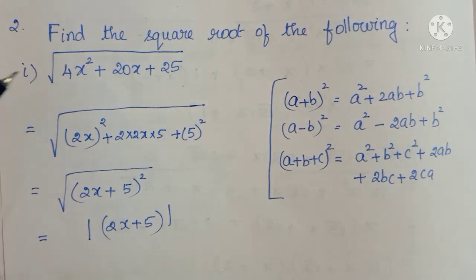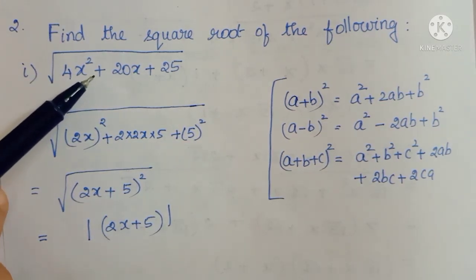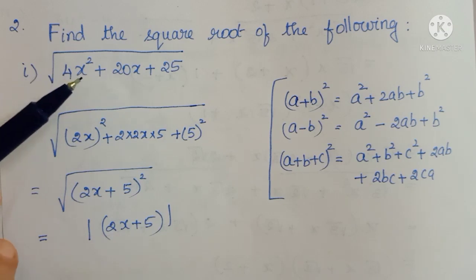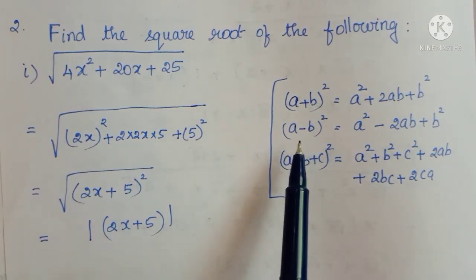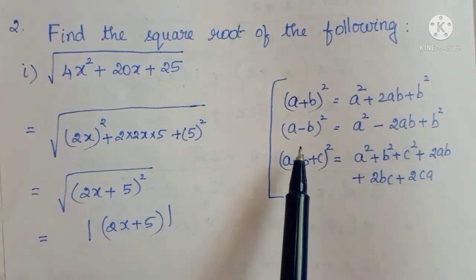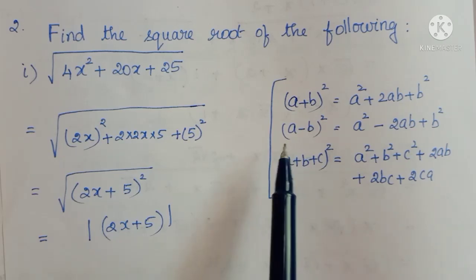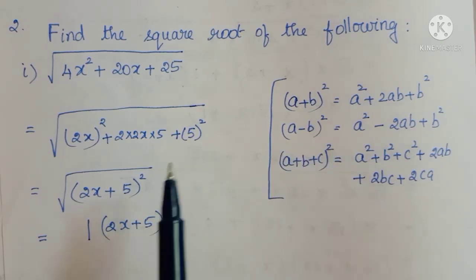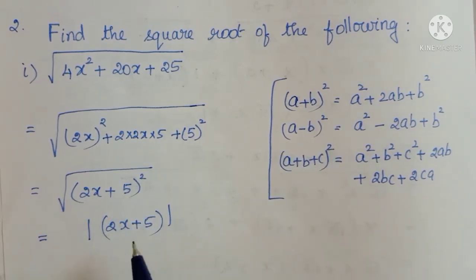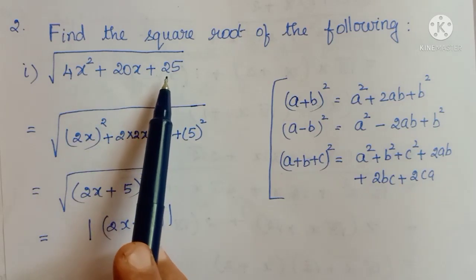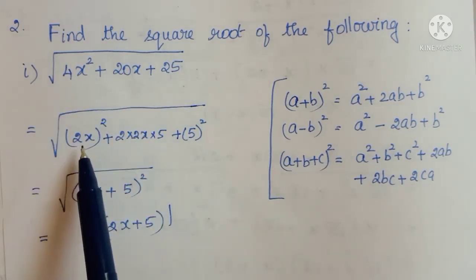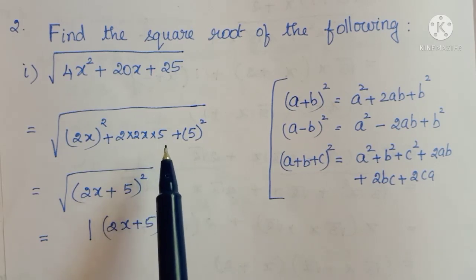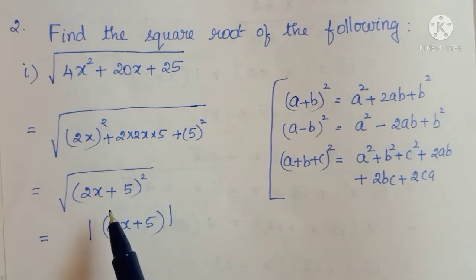Sometimes in the question, instead of a plus term, they will give a minus. So when there is a minus, we use the second formula. We identify the values of a and b, then write it in the a minus b, whole squared form. So it is very simple — for the first and third terms, if you want to convert to the square formula, we can easily write it in that format using the formula method. But here we can also use the factorization method.